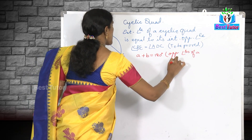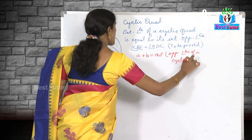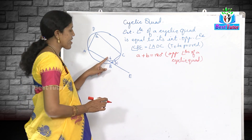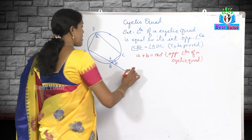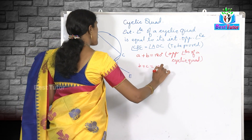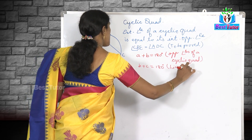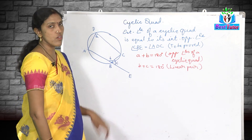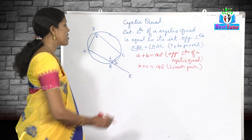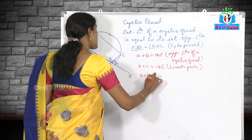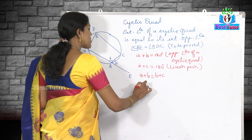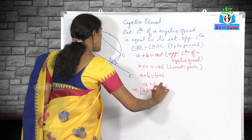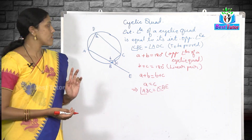We know from the first property that opposite angles of a cyclic quadrilateral are supplementary, so a plus b equals 180 degrees. Now consider the straight line — at point B, the angle ABC and exterior angle CBE form a linear pair, so b plus c equals 180 degrees. Both equations have the same right-hand side, therefore a plus b equals b plus c, which implies a equals c. This means angle ADC equals angle CBE — the exterior angle equals the interior opposite angle.